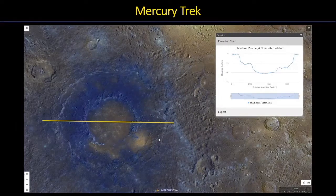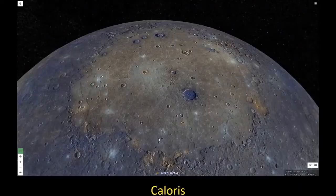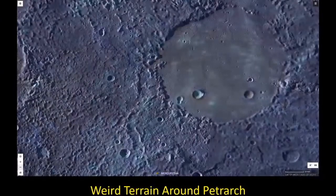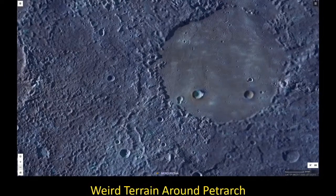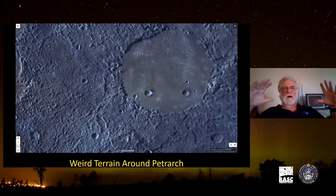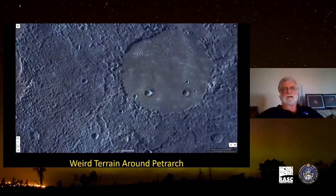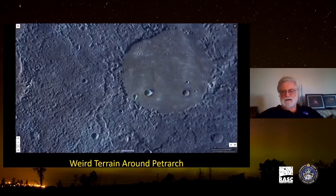Moving on to Mercury, we have our Mercury Trek portal. We can visualize Mercury's largest impact basin, the Caloris Basin. Fascinatingly, directly opposite on the globe is an area labeled 'weird terrain' — very jumbled, broken terrain. This was formed by the shock wave expanding out from the Caloris Basin, going all the way around the planet and refocusing on the far side antipodal to the impact basin. Where that shock wave all came together, it disrupted the ground in a very spectacular way.